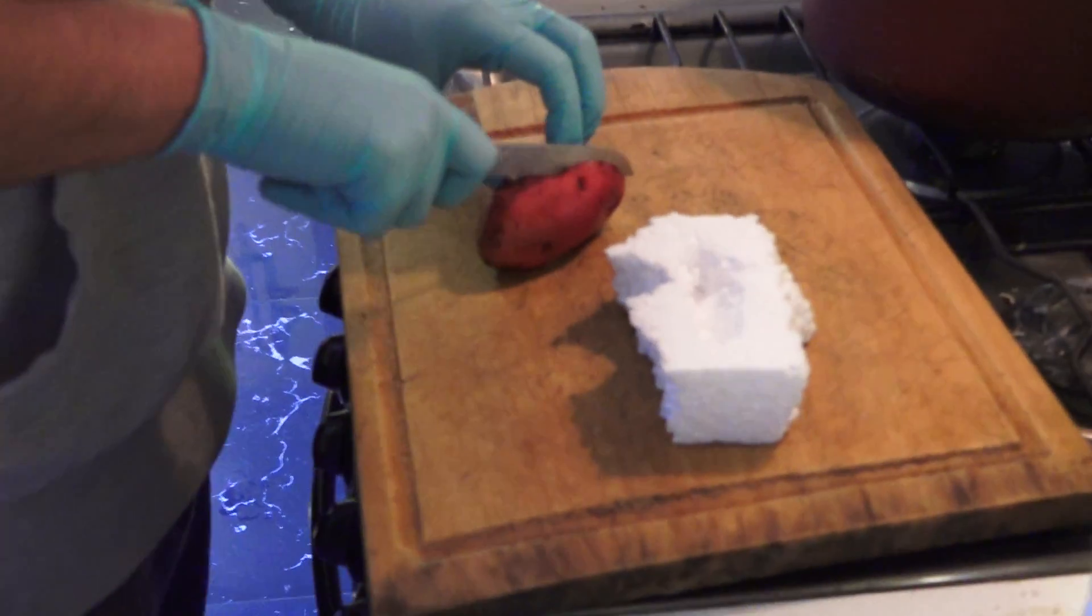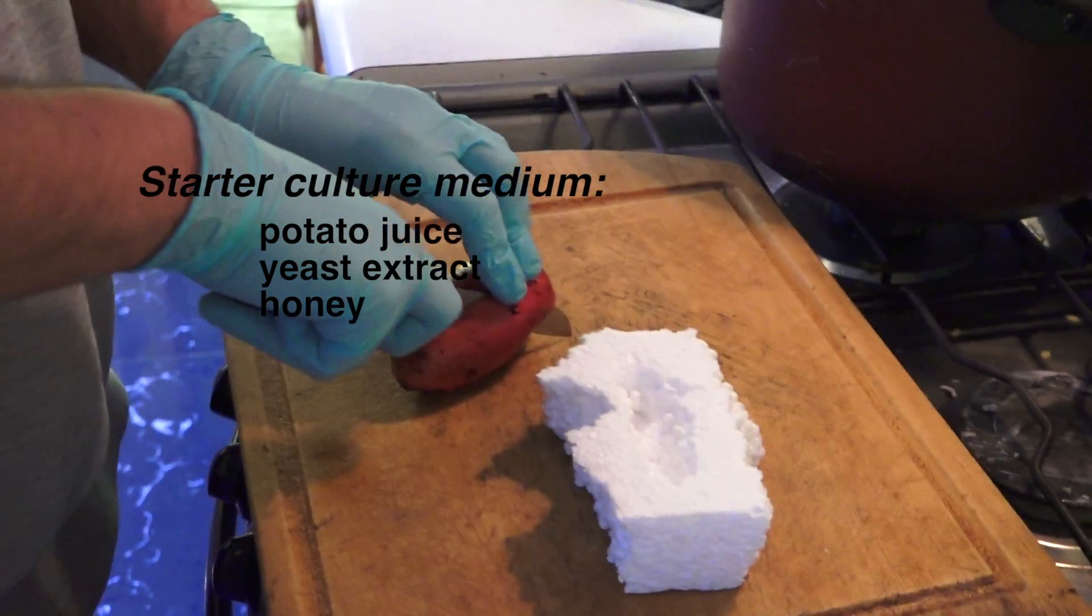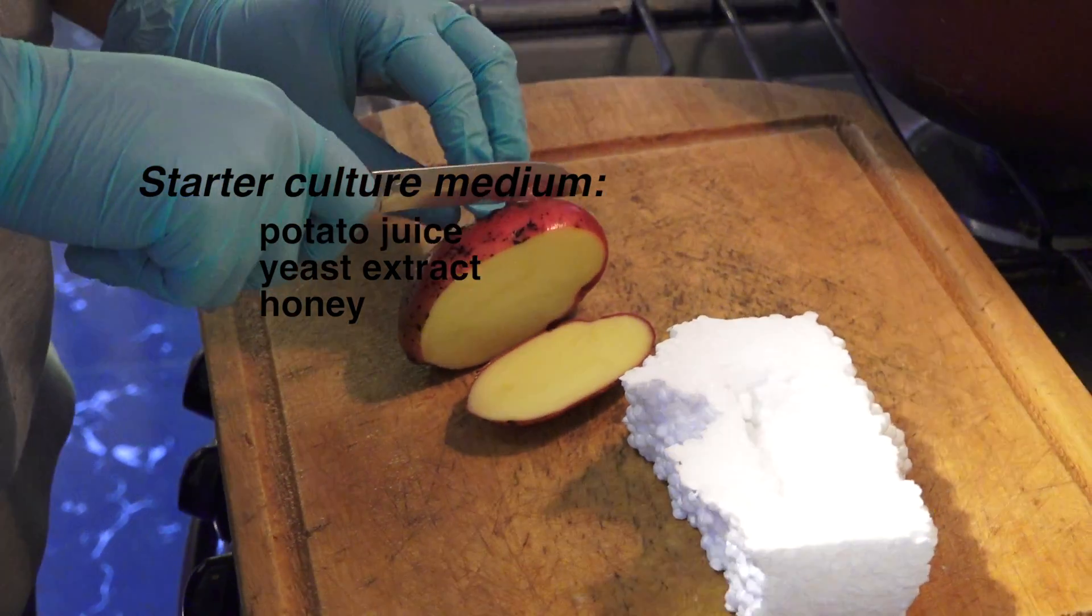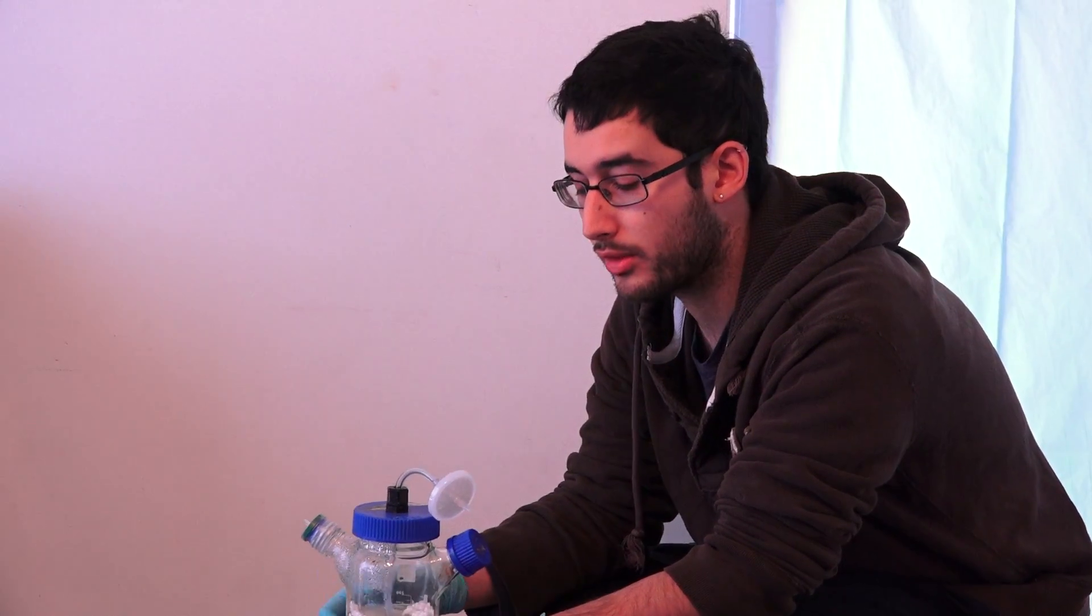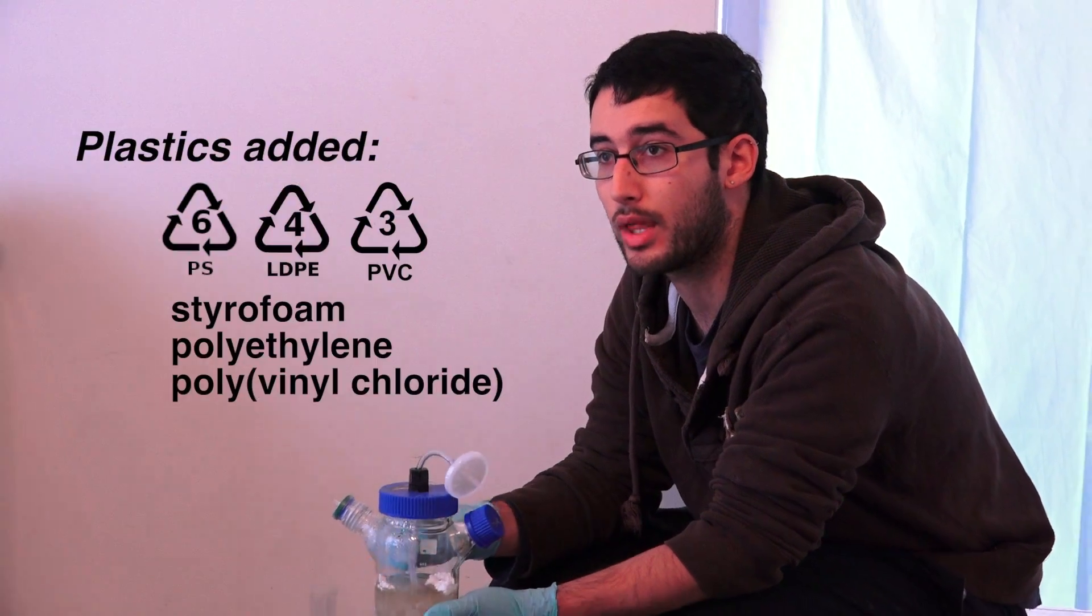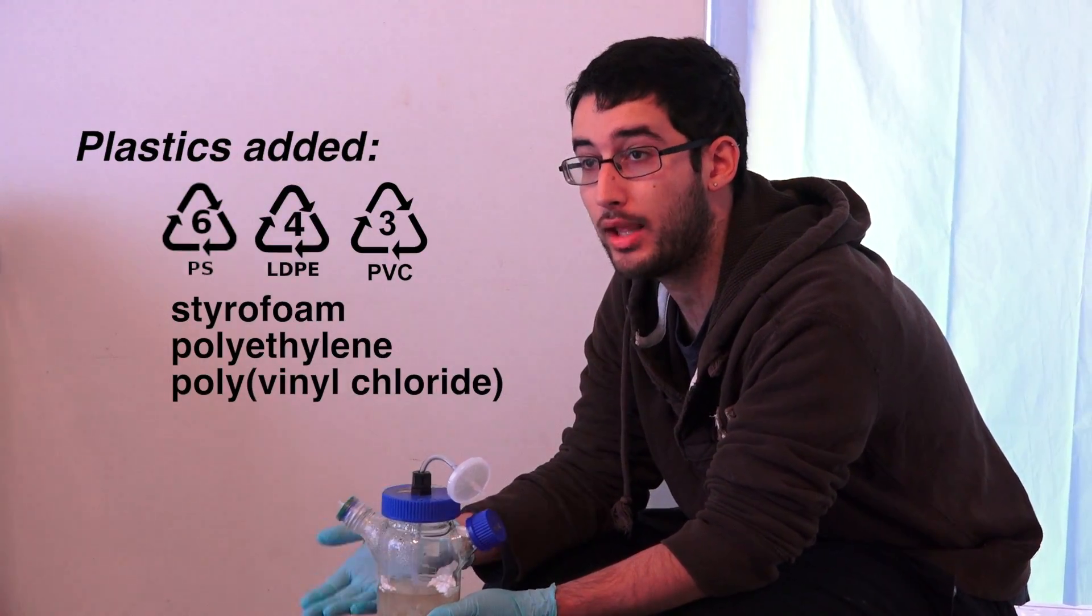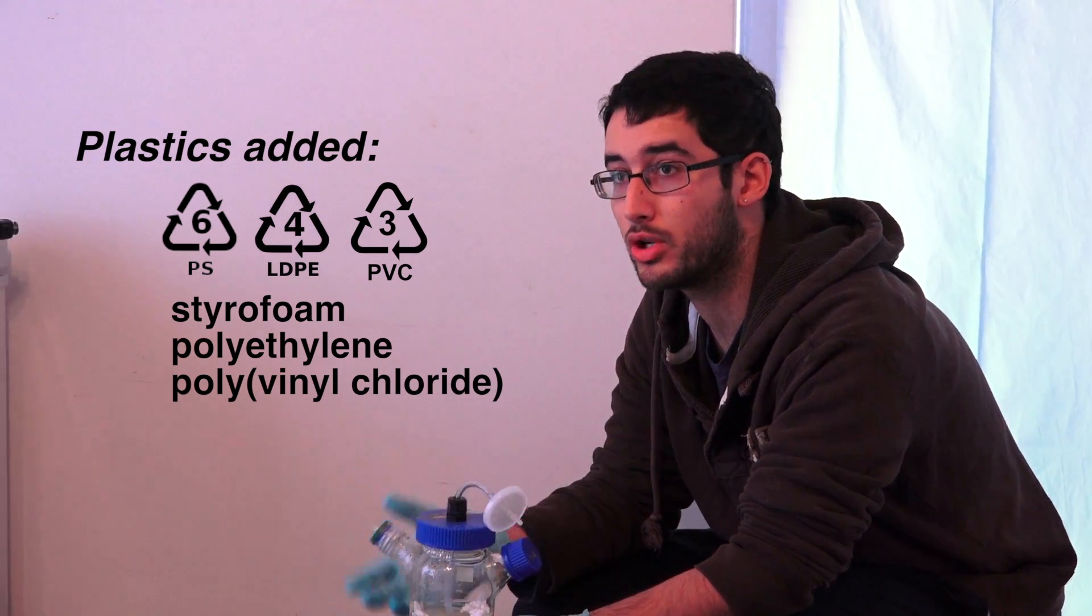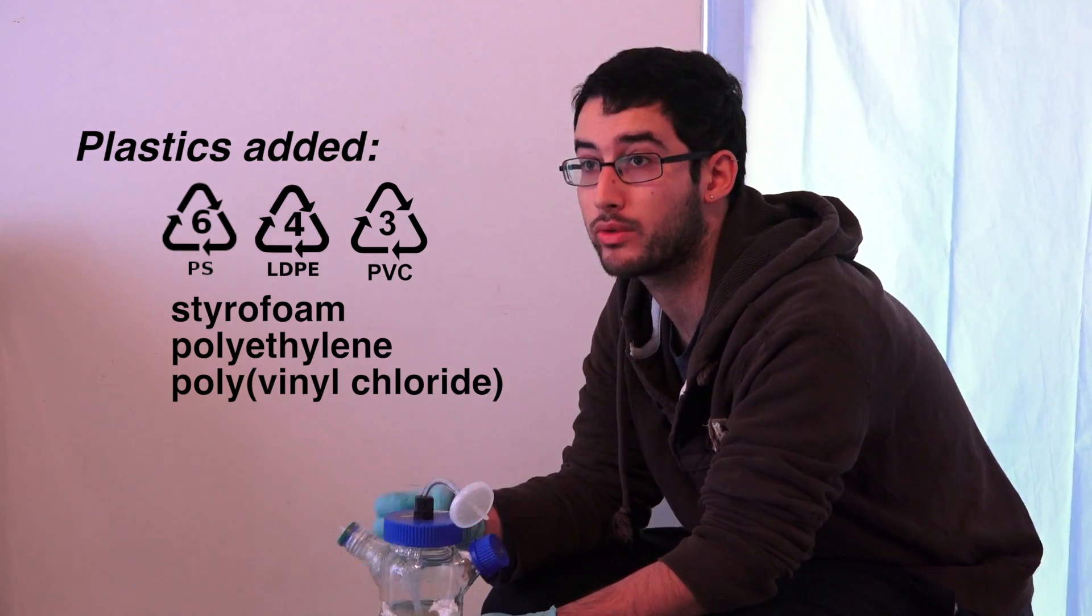I started this with some regular broth. It's basically potato juice and honey. And as the fungi eat up the broth, I add in the plastics so that when they run out of the potatoes to eat, all that's left in there is the plastics. So they're forced to adjust their metabolism so that they're eating mostly plastics.